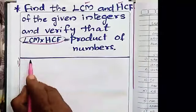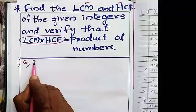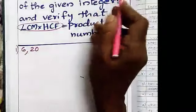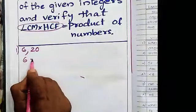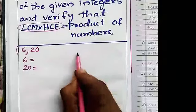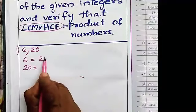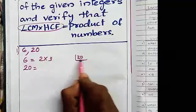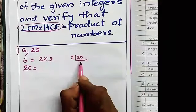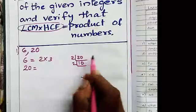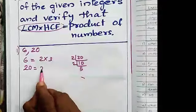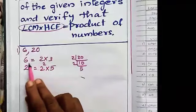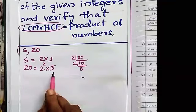First question: let the numbers be 6 and 20. We are going to find the LCM and HCF. 6 equals 2 into 3. For 20, dividing by 2 gives 10, dividing again by 2 gives 5. So 20 equals 2 squared into 5. Those are the prime factors.